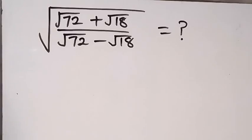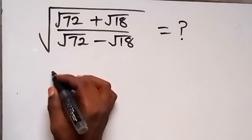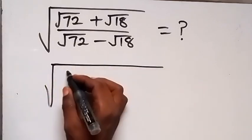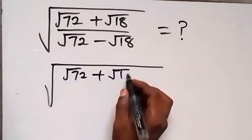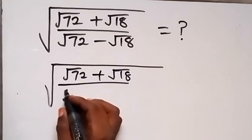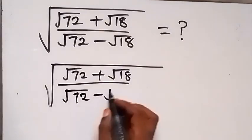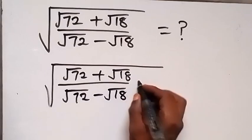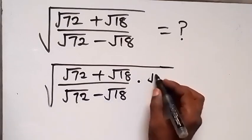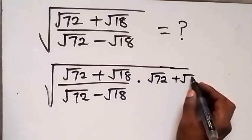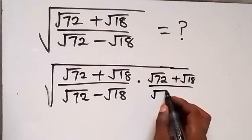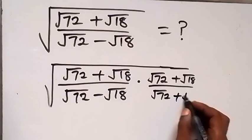Hello, you are welcome. How to solve this problem — we want to simplify this. We can write this as square root of (root 72 plus root 18) divided by (root 72 minus root 18), then we multiply by (root 72 plus root 18) divided by (root 72 plus root 18).